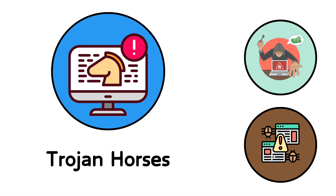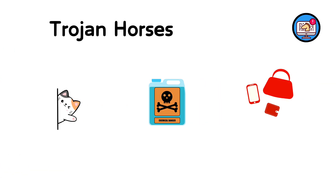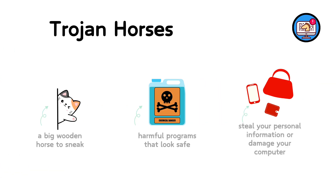23. Trojan Horses. Think of the Trojan horse story where soldiers hid inside a big wooden horse to sneak into the city of Troy. Computer Trojans are harmful programs that look safe but secretly have bad intentions. When you run them, thinking they are good programs, they can steal your personal information or damage your computer.